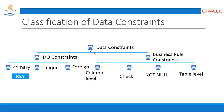Let's look at the classification of data constraints in SQL. There are two types: input/output constraints and business rule constraints. Input/output constraints are classified into three types: primary key, unique key, and foreign key. Business rule constraints are based on the requirement of the database or application — sometimes at the table level, sometimes at the column level — using checks, not null, and null conditions.